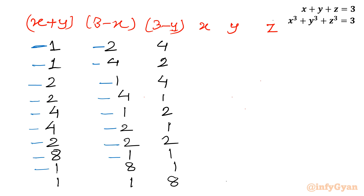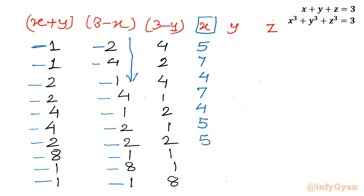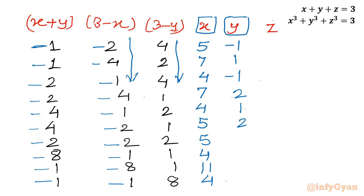Computing x from the negative-factor table: values come out as 1, 5, 7, 4, 5, 5, 4, 11, 4 (by subtracting negative entries from 3, e.g. 3-(-2)=5, 3-(-4)=7). For y: 3-4=-1, 3-2=1, 3-4=-1, 3-1=2, 3-2=1, 3-1=2, 3-1=2, 3-2=1. We check which row has x+y matching the first column.